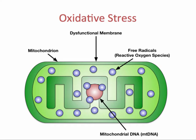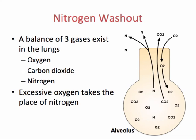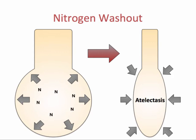A bigger problem is nitrogen washout. A balance of three gases exists in the lungs — oxygen, carbon dioxide, and nitrogen. Nitrogen helps to keep the alveoli open and expanded, along with surfactant. Because oxygen weighs more than nitrogen, it easily takes the place of nitrogen in the alveoli. Without nitrogen, atelectasis or the collapse of alveoli occurs. When this happens, you can no longer exchange oxygen and carbon dioxide in that alveolus.